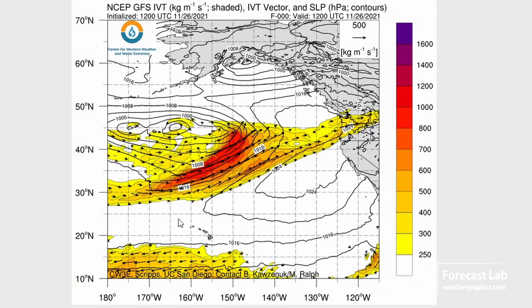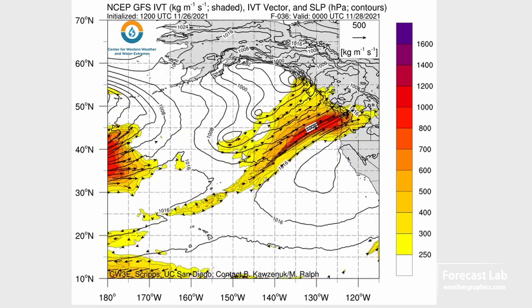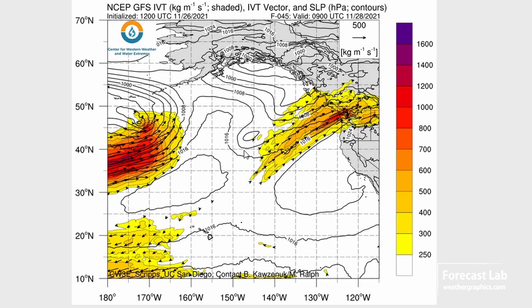Let's check in on the atmospheric river situation. We are in a pretty serious pattern for the far Pacific Northwest. Here's the next system upstream that'll be coming into the region tomorrow night into Saturday, heading pretty much right into the Juan de Fuca Strait area between Vancouver Island and the Washington coastal range. That looks like it could have a pretty substantial effect on the area between Seattle and Vancouver — IVT values near 800.